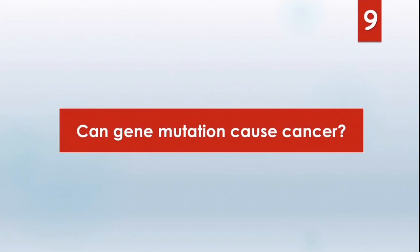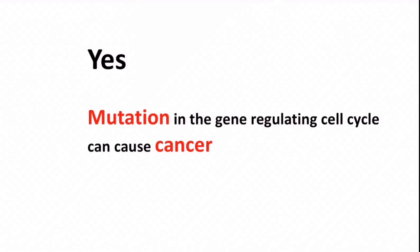Our next question is, can gene mutation cause cancer? The answer is yes. How actually this is happening? When mutation is occurring in a gene which is regulating the cell cycle, it can cause cancer. For example, p53 is a tumor suppressor protein. The function of the p53 is to regulate the speed of the cell cycle. But if there is a mutation, cell cycle will go on in an uncontrolled way. So it will cause cancer.